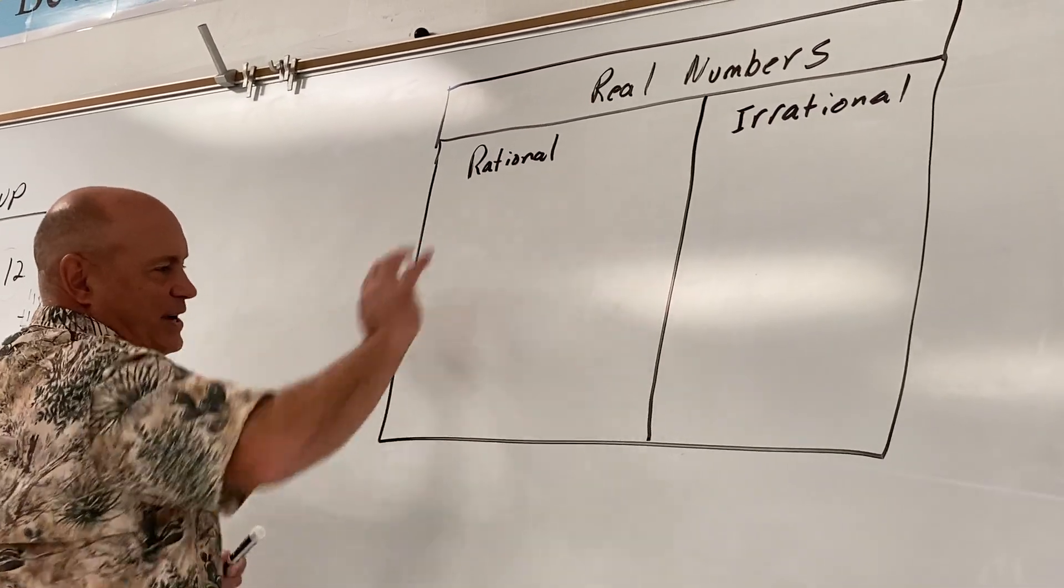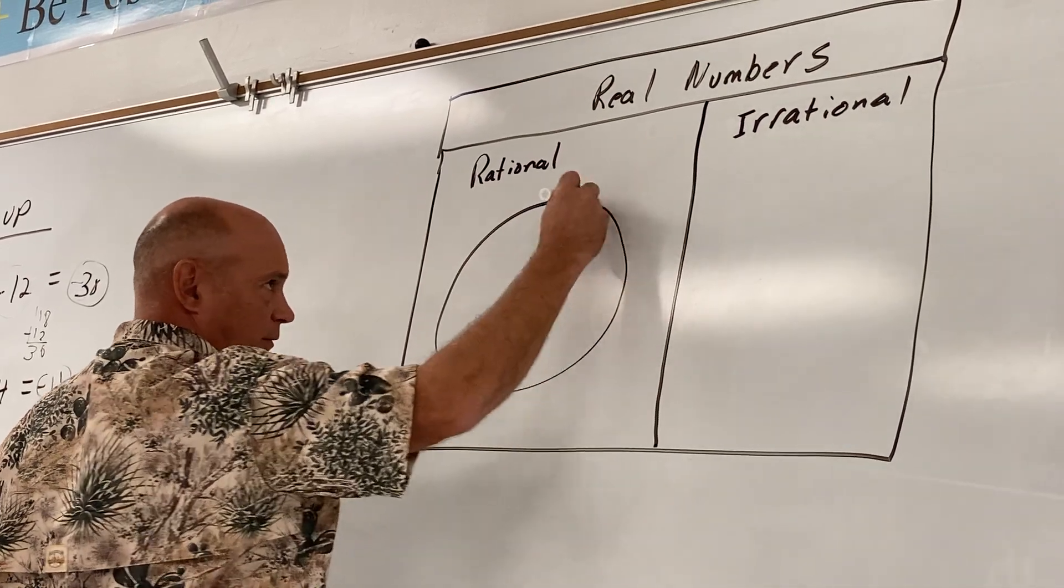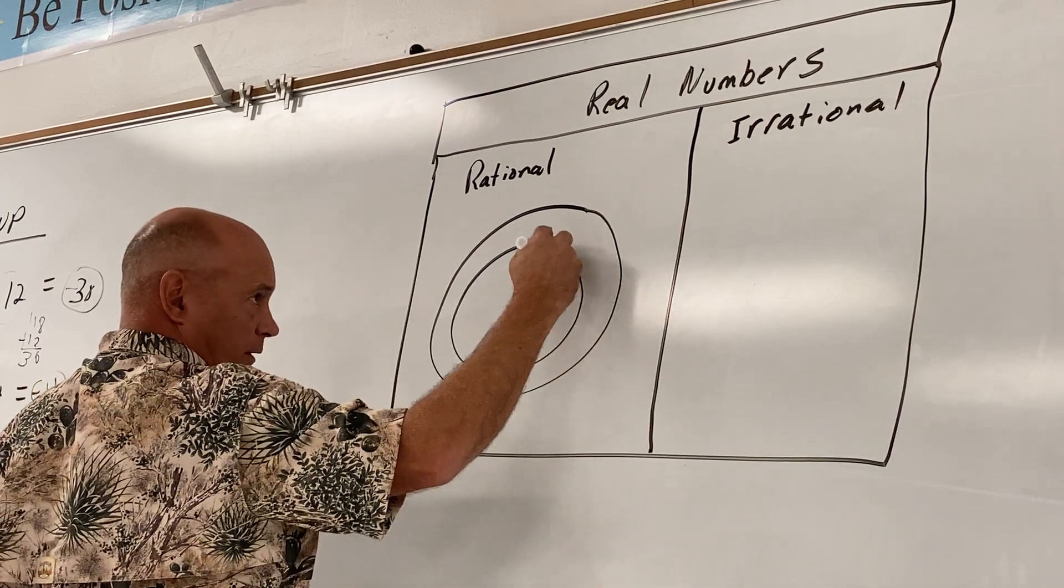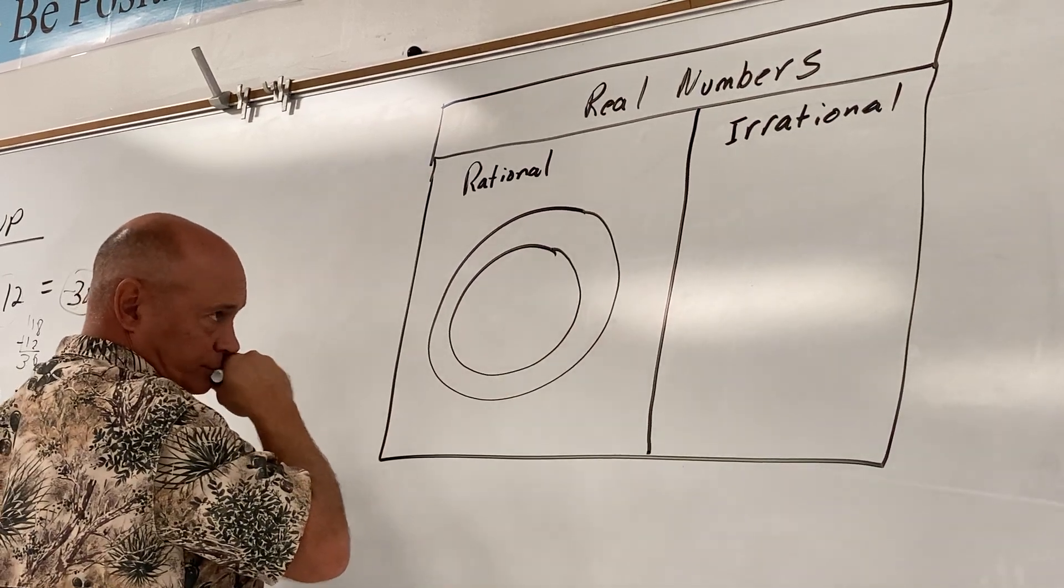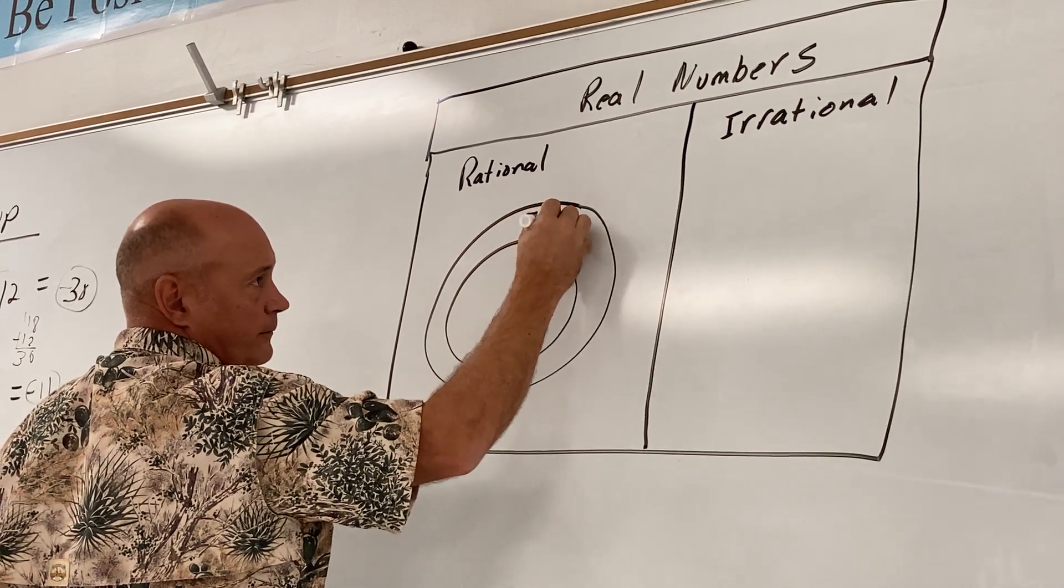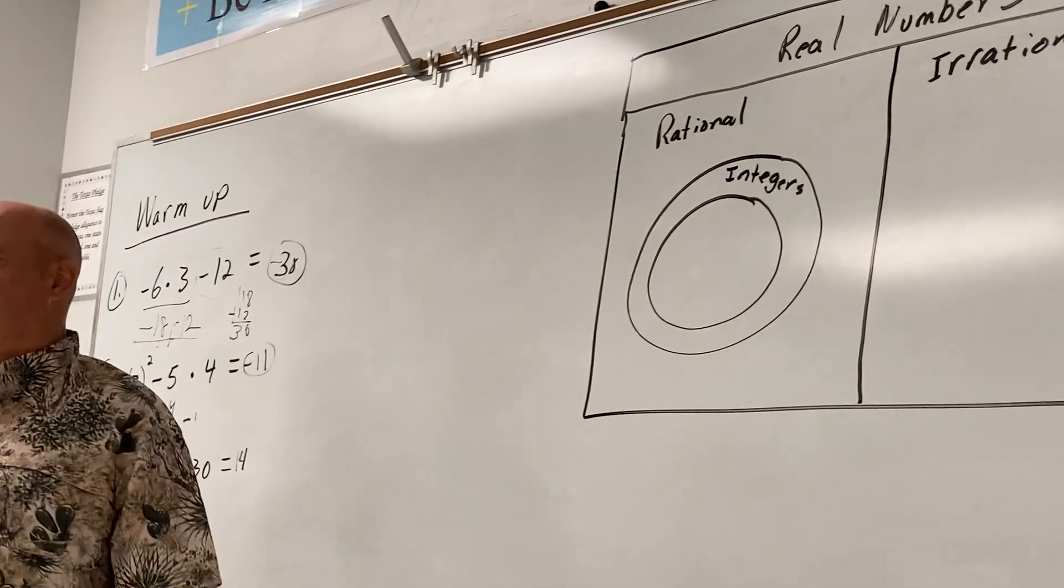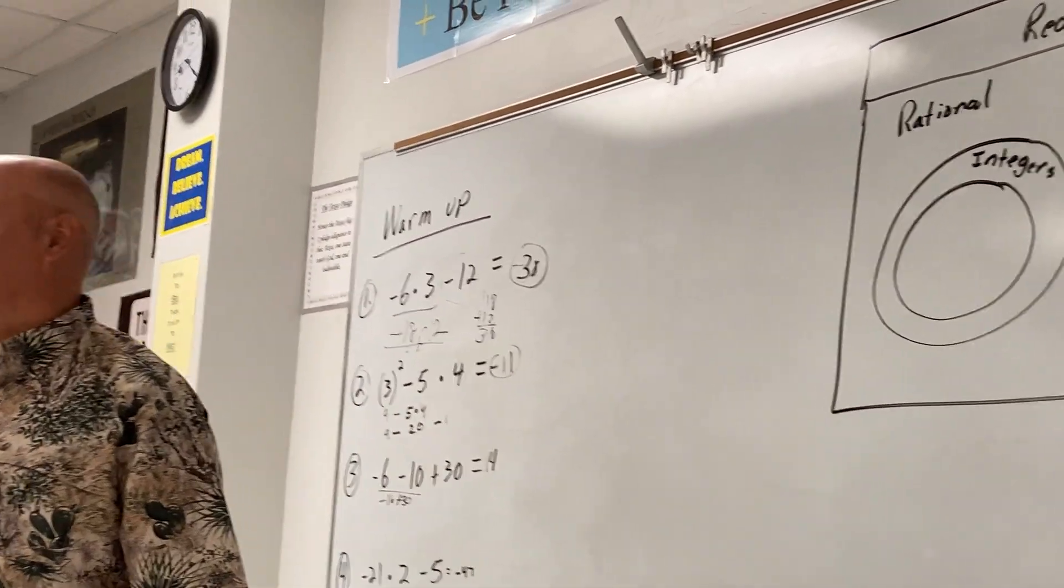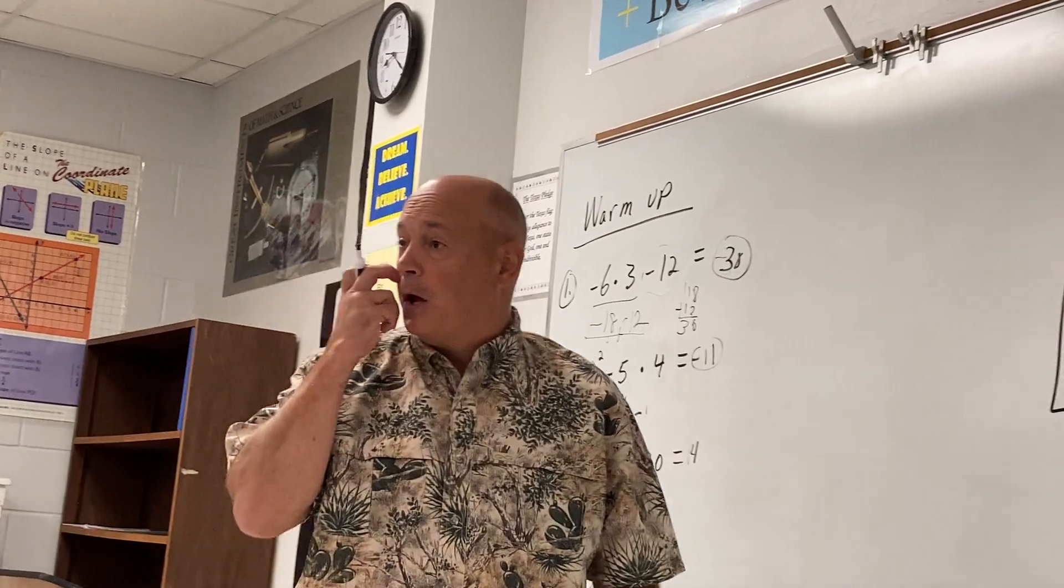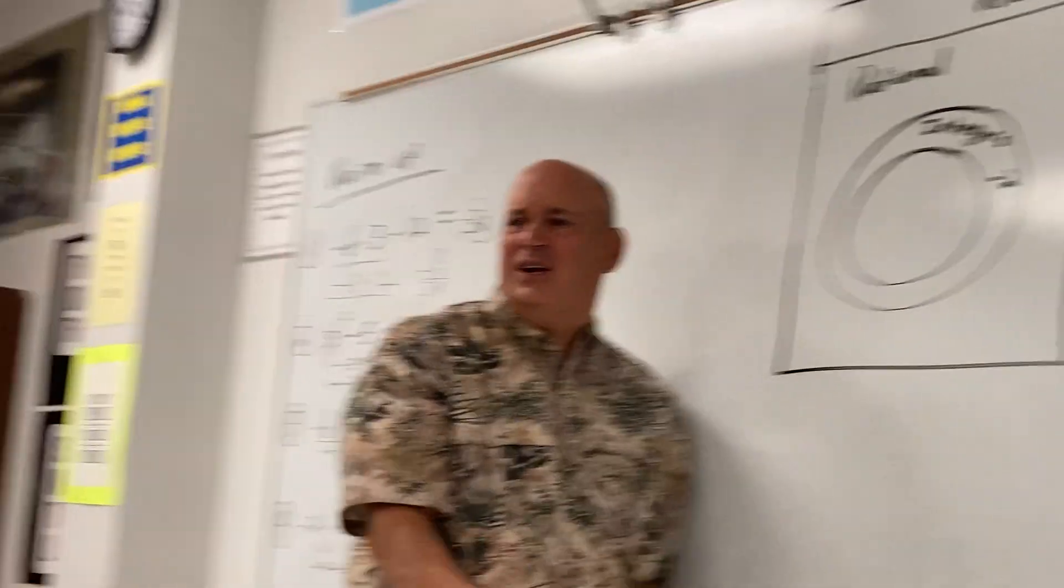Inside the set of rational numbers, draw one circle. Two circles. We have what we call integers. Can somebody give me an example of an integer? Matt? Negative two. Negative two is an integer. Give me another integer.